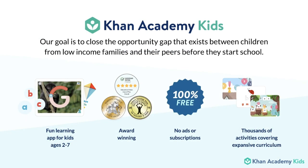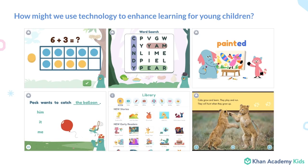Khan Academy Kids is an educational program for ages 2 through 7 that's designed to inspire a lifetime of learning and discovery. Khan Kids includes thousands of activities, lessons, and books that cover preschool through grade 1 English language arts and math common core standards and social-emotional development.